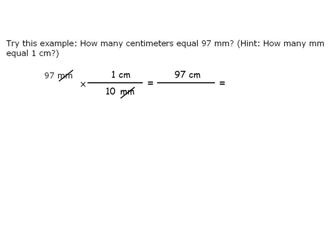97 divided by 10 is 9.7 centimeters. So 9.7 centimeters is equivalent to 97 millimeters.